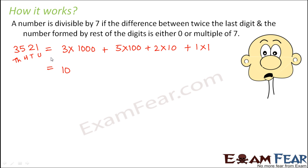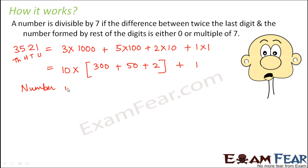We have written the number in the form 10x + y, where x represents the number formed by all digits except the units digit — here x = 352 — and y is the last digit, the digit at the units place. We now need to determine if 10x + y is divisible by 7.